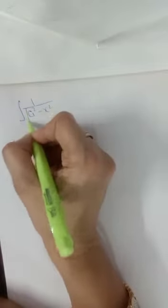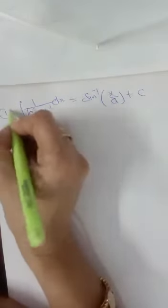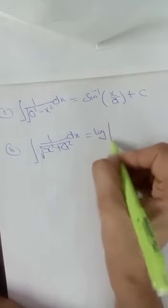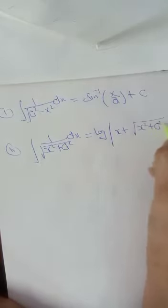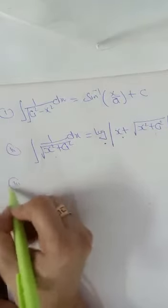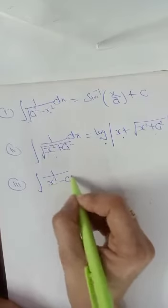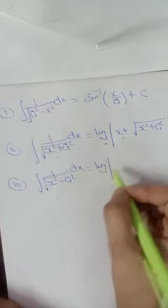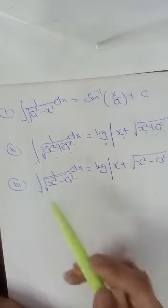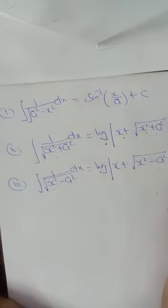The next triplet of formulas: first, ∫1/√(a² - x²) dx = sin⁻¹(x/a) + c. Second, ∫1/√(x² + a²) dx = log|x + √(x² + a²)| + c. Third, ∫1/√(x² - a²) dx = log|x + √(x² - a²)| + c. The log form has the same pattern — log|x + function|, where the function matches the expression under the root.